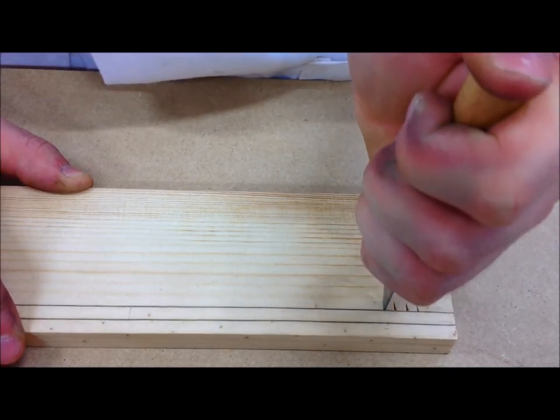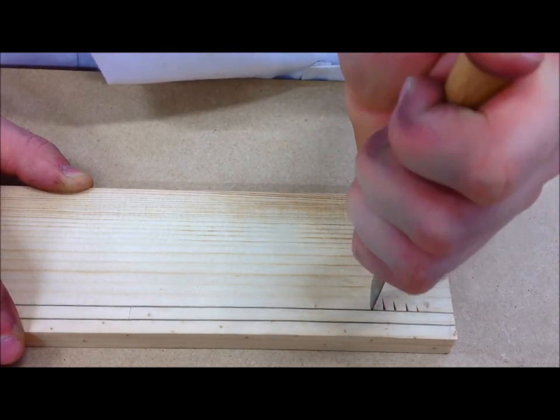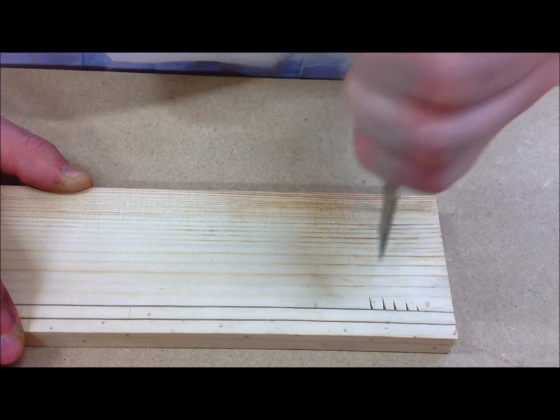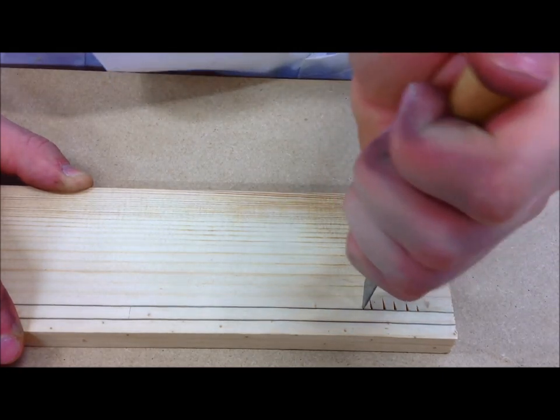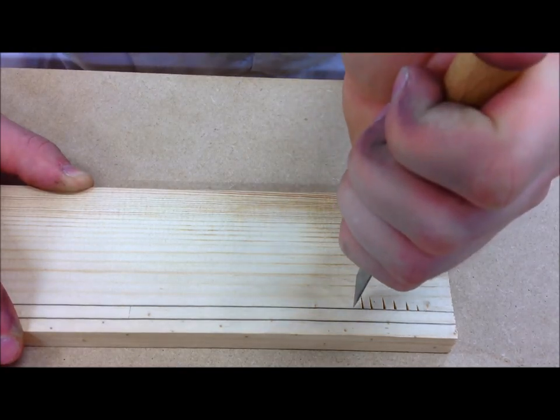In order to create larger indentations, the rocking motion can be introduced. This simply involves pivoting the knife towards yourself or away from yourself to increase the length of the stab.